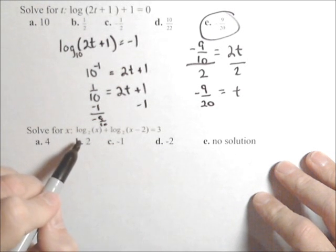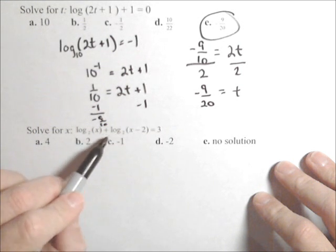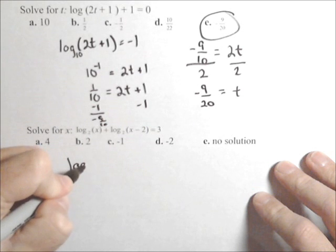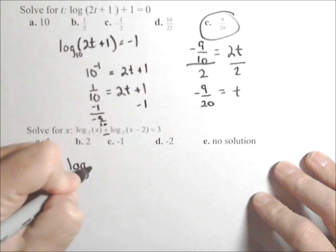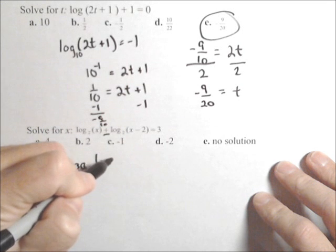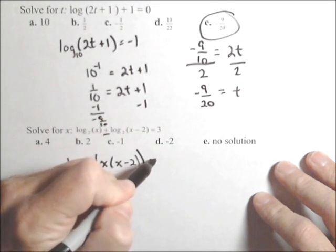The second one here is gonna be really similar, but we are gonna have to apply a property of logs first. We need to rewrite this left-hand side as a single log. They're both base two and because it's addition, that means multiplication. Log base two of x times x minus two equals three.